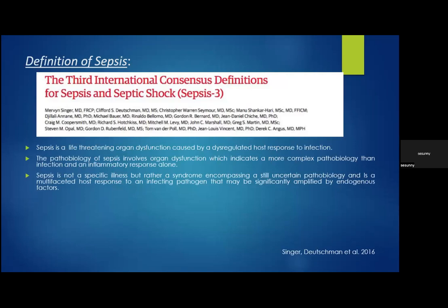Before we talk about the biomarkers, it's important to go through the definitions and the basic pathophysiology of sepsis, so we understand where and why the biomarkers are used. The audience is quite familiar with the Sepsis-3 definition of sepsis, which is a life-threatening organ dysfunction caused by a dysregulated host response to infection. The pathobiology of sepsis involves organ dysfunction, which indicates a more complex pathobiology than just infection and an inflammatory response alone. Sepsis is not a specific illness, but rather a syndrome with uncertain pathobiology, and is a multifaceted host response to an infecting pathogen that may be significantly amplified by endogenous factors.